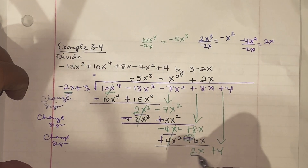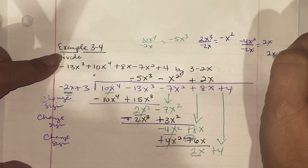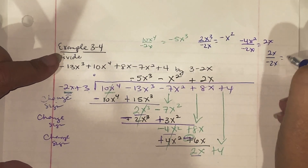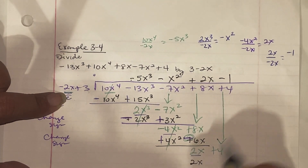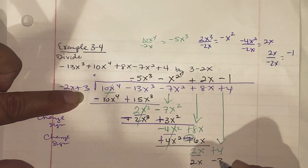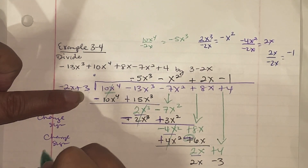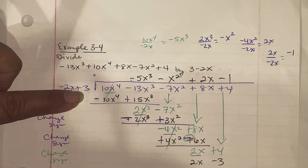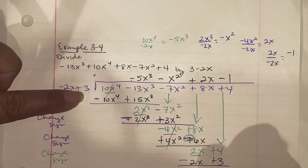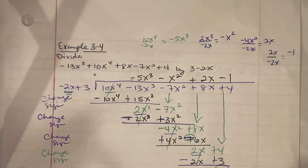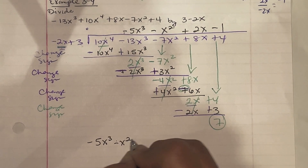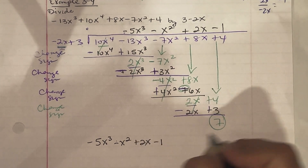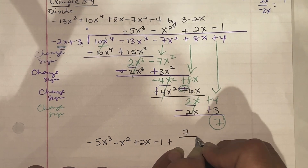Last step: 2x divided by negative 2x is negative 1. Write negative 1 on top. Multiply: negative 1 times negative 2x gives positive 2x, and negative 1 times 3 gives negative 3. Change the signs. 2x minus 2x cancels. 4 plus 3 is 7 — this is our remainder. The final answer is negative 5x cubed minus x squared plus 2x minus 1, plus 7 over (negative 2x plus 3).